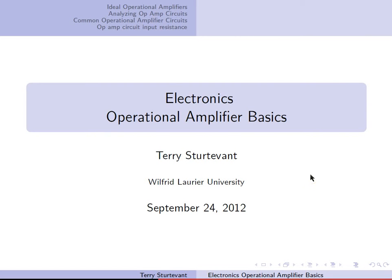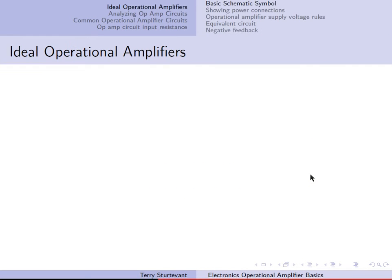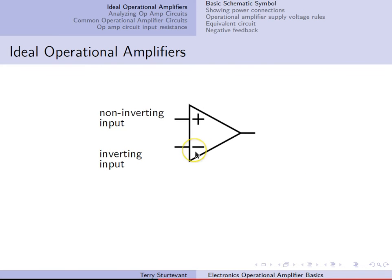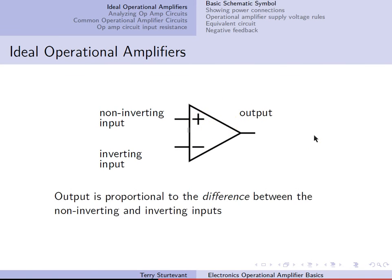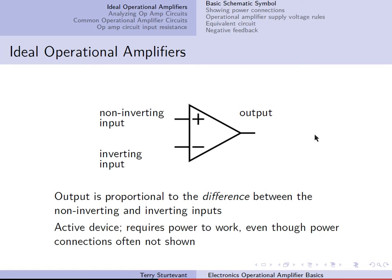This video is about the basics of operational amplifiers. An ideal operational amplifier has two inputs: the inverting input, denoted by the minus sign, and the non-inverting input, identified by the plus sign. It has an output, and the output is proportional to the difference between the non-inverting and inverting inputs.